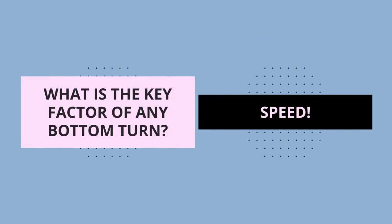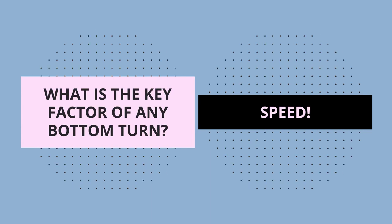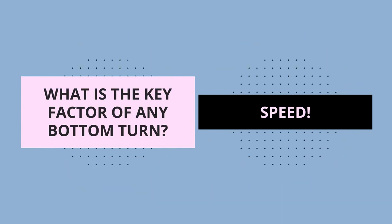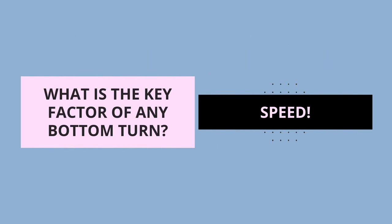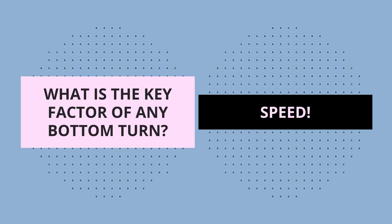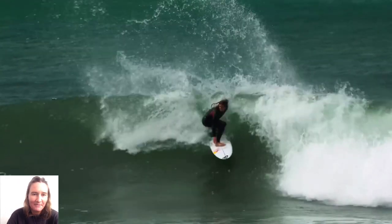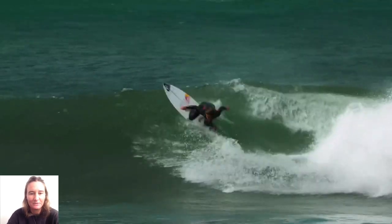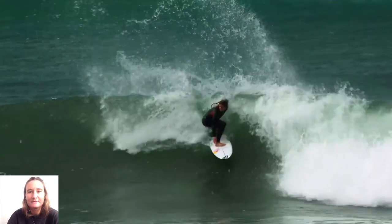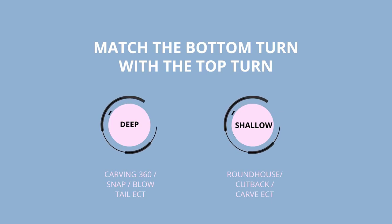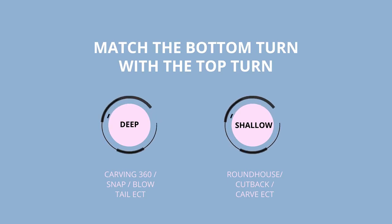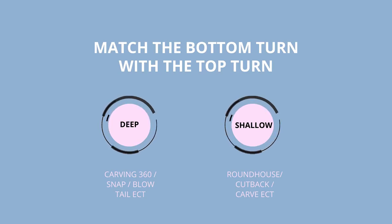What is the key factor of any bottom turn? It is speed — the most important factor in any bottom turn, whether it's a deep bottom turn or a shallow bottom turn. Make sure that you get enough speed, otherwise you just won't be able to execute the turn. And the last important thing: you need to match the desired bottom turn — either deep or shallow — with the correct top turn and your skill level.